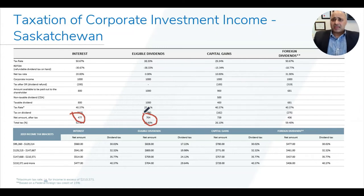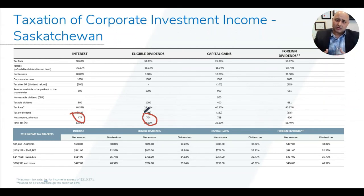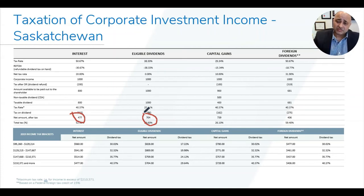Moving to capital gains: if you buy an asset for $1,000 and it grows to $2,000, that $1,000 gain is a capital gain. As of right now the inclusion rate is 50 percent, so only 50 percent is taxed. The effective corporate tax rate is 25.354 percent, with an RDTOH credit of 15.34 percent, resulting in a net corporate tax of 10 percent. On $1,000 you pay $100 in the corporation, leaving $900. Of that $900, $500 is paid out through the Capital Dividend Account — a separate mechanism — and the remaining $400 is paid as a taxable dividend to the shareholder.